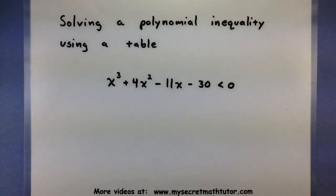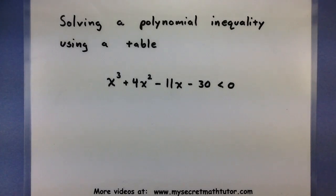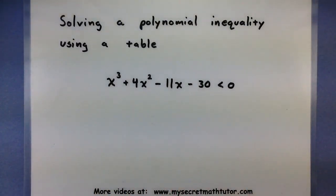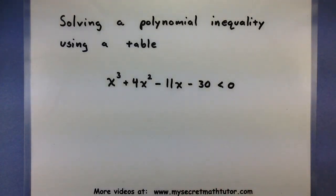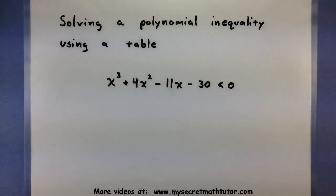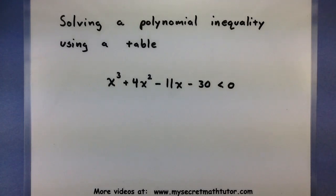In this video I want to show you how to solve a polynomial inequality using a table. The idea is that we are going to take a polynomial like this, and it's an inequality because we want to know where it is less than zero. I want to break this into its factors and figure out whether it's either greater than zero or less than zero next to each of the zeros. So let's get started.